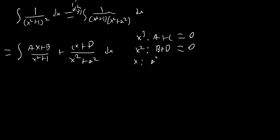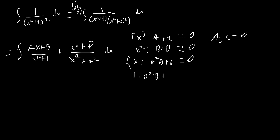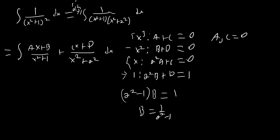Looking at the x terms, that's going to be a²A + C = 0. Using those two equations we can see that A and C are both going to be zero. Looking at the constant terms we see a²B + D = 1. Subtracting one equation from the other gives (a² − 1)B = 1, which means B = 1/(a² − 1) and D = −1/(a² − 1).